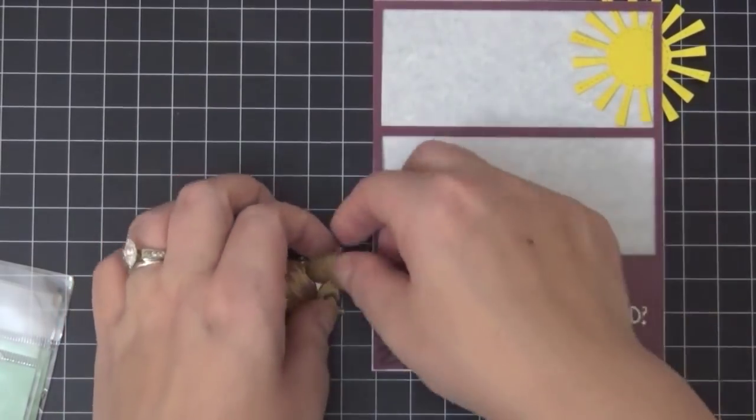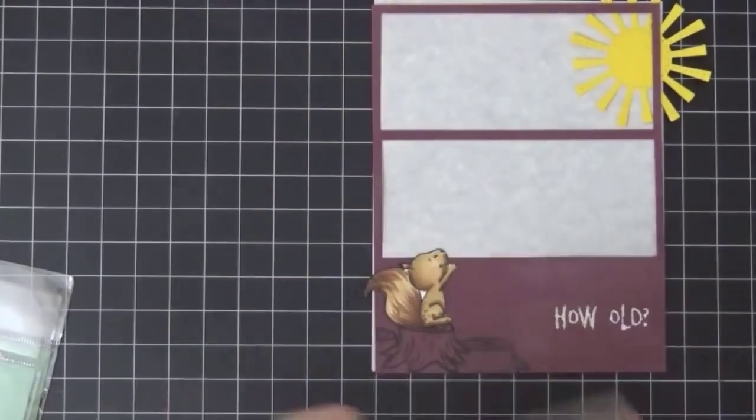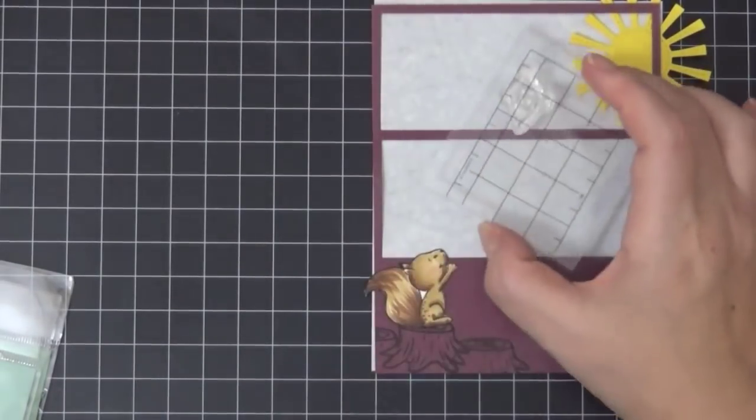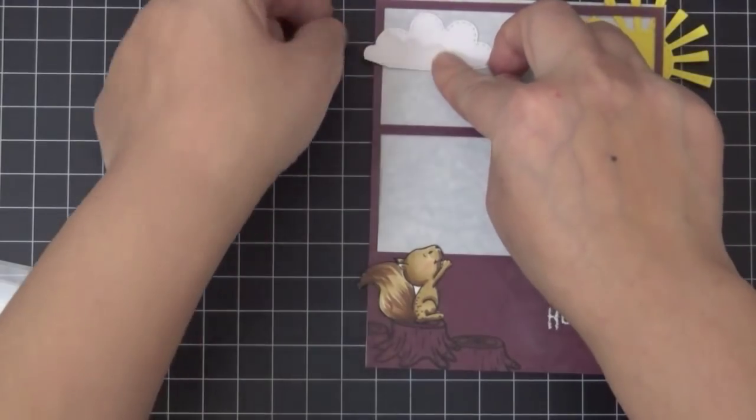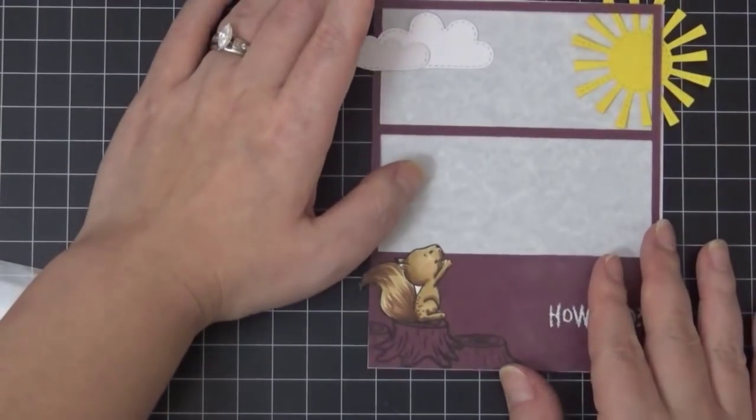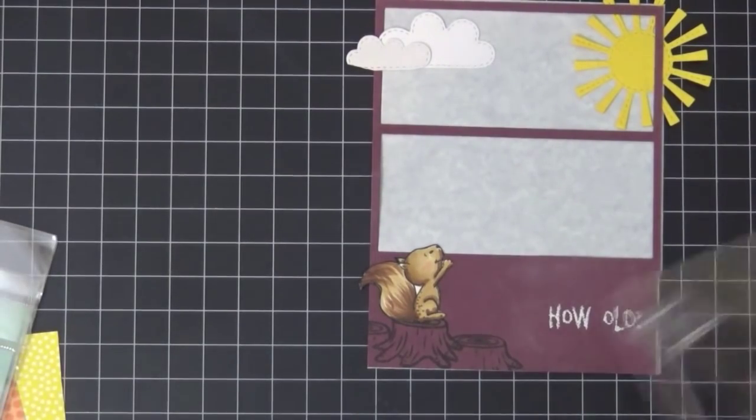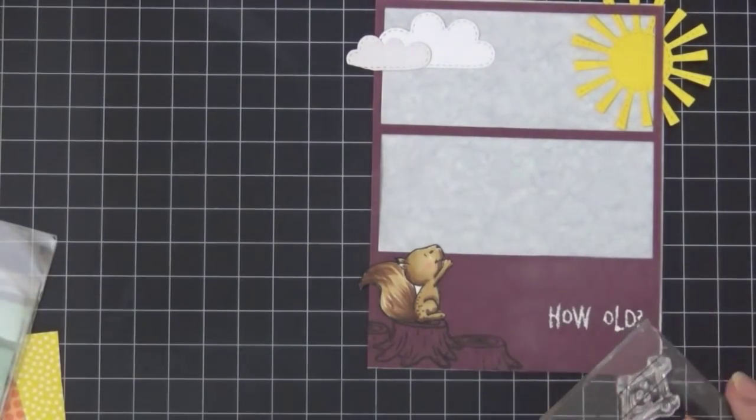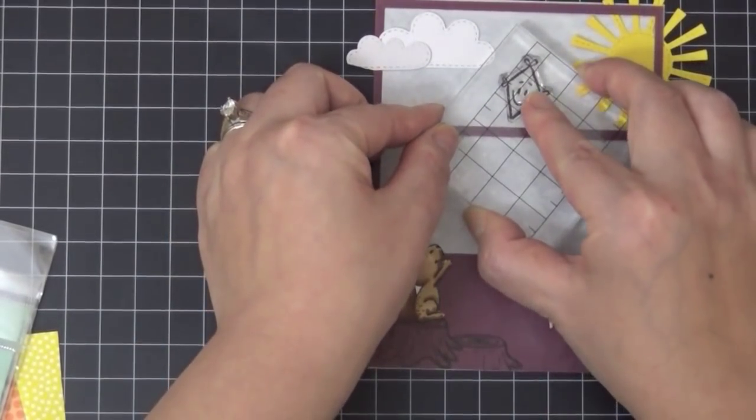So this is how my scene is going to look. And now I'm going to go ahead and add some clouds here. That was cut with the same dye set. It has really cute stitching all around.